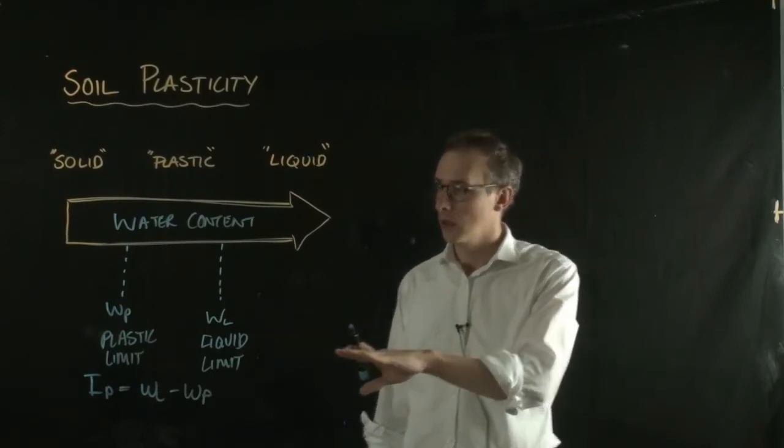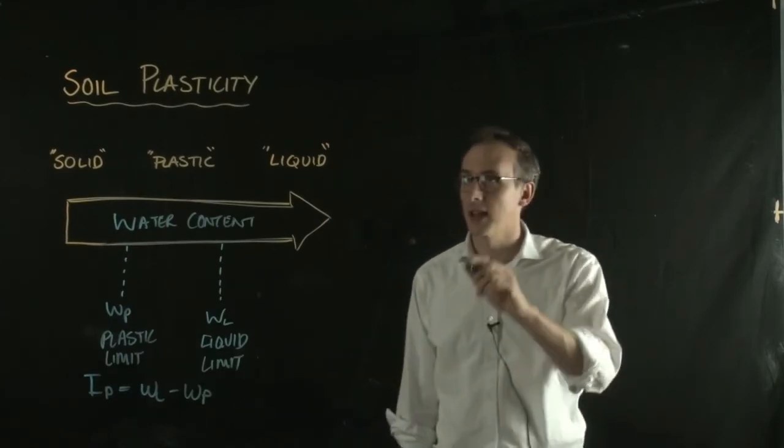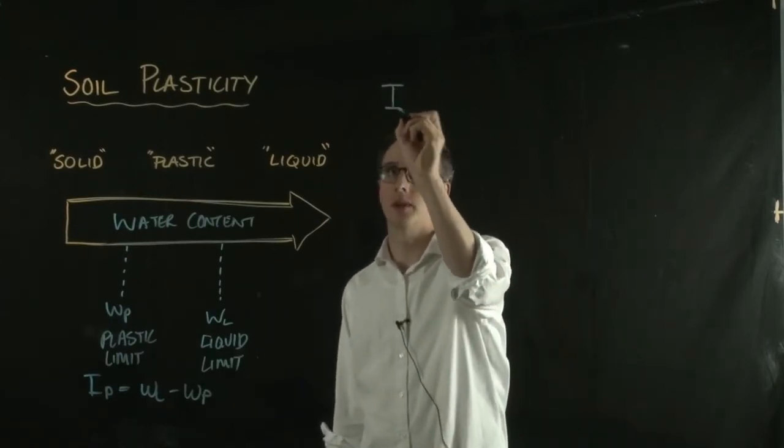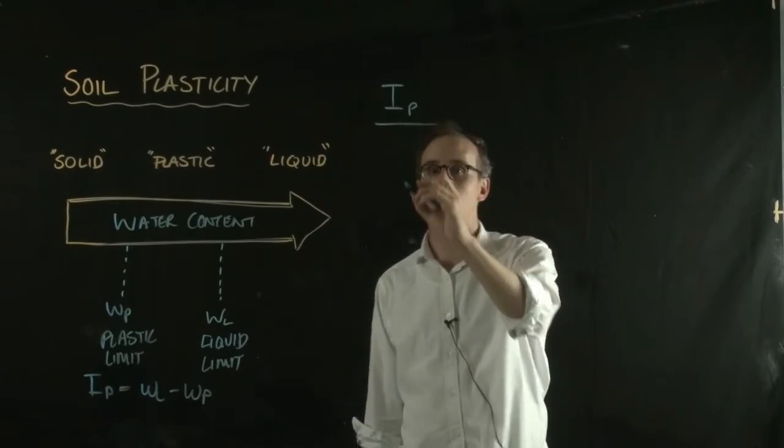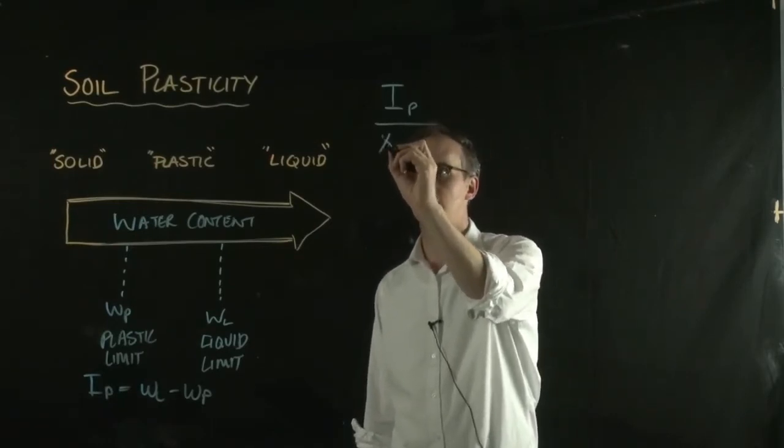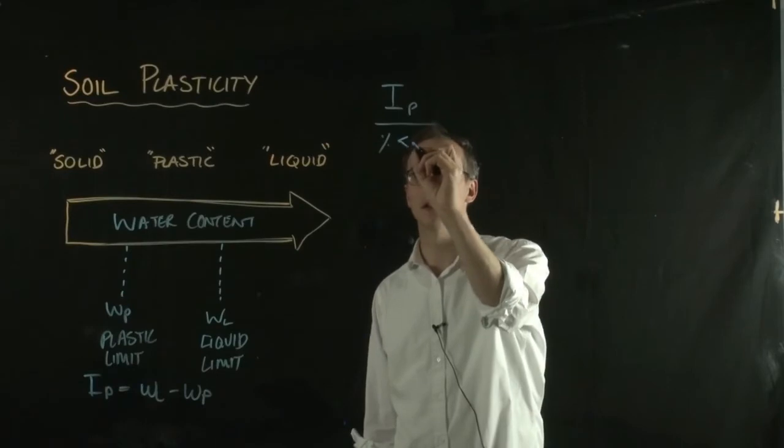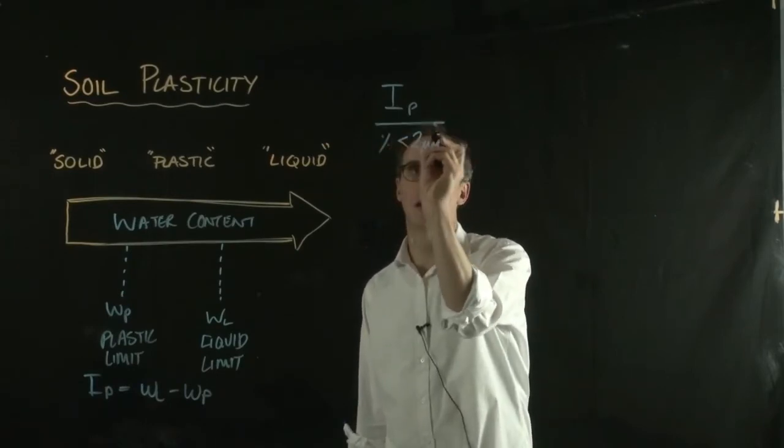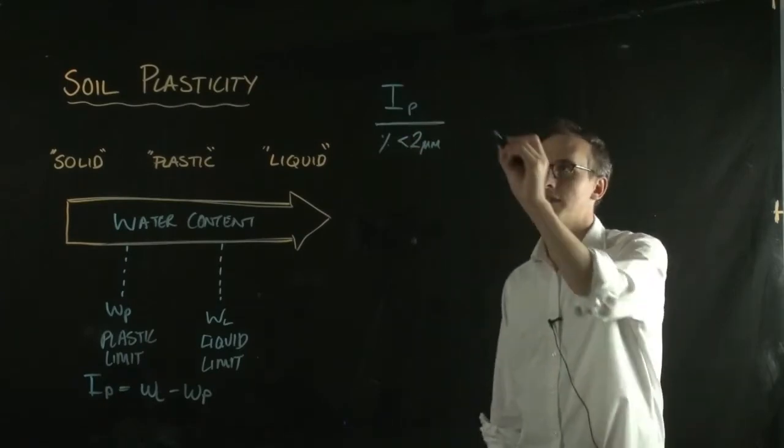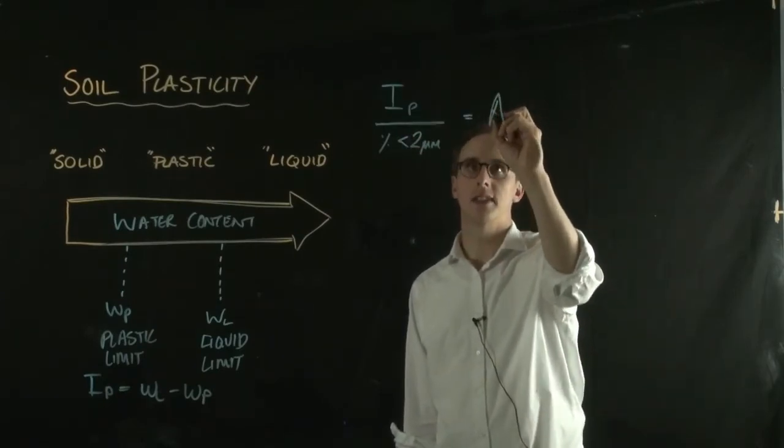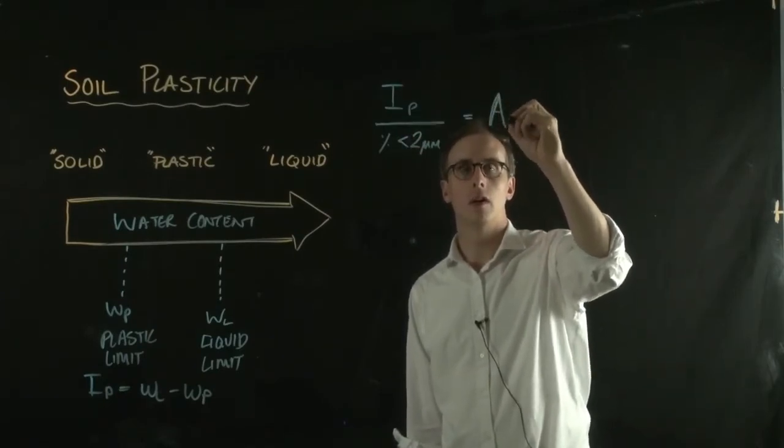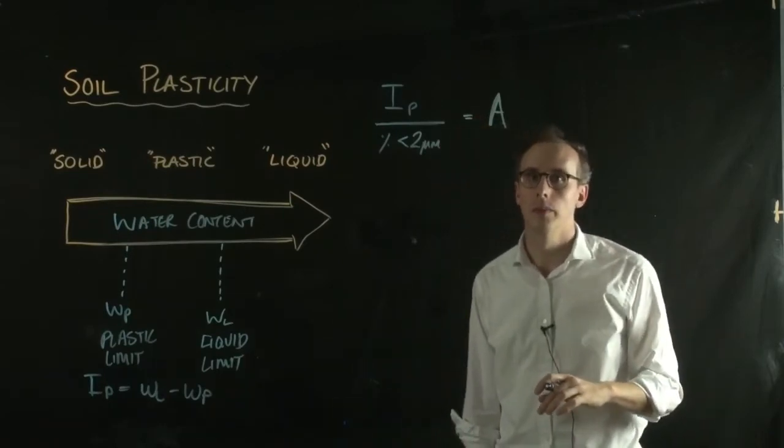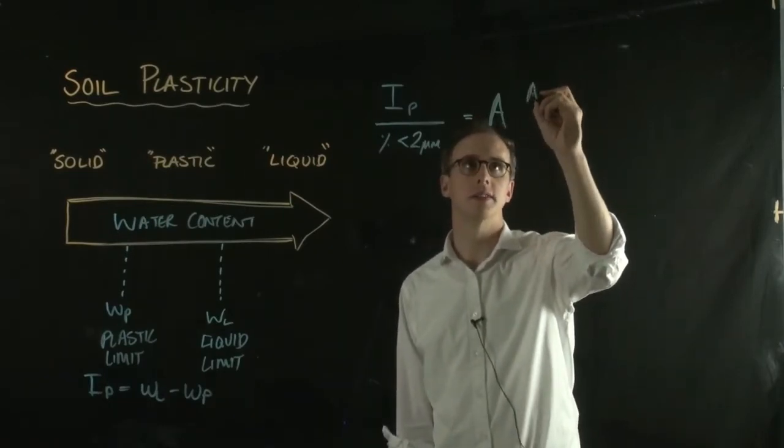So if we take this IP plasticity index and we divide it by the percentage of the sample that's less than 2 micrometers in diameter, what we're defining here is the activity of the clay. So this is activity.